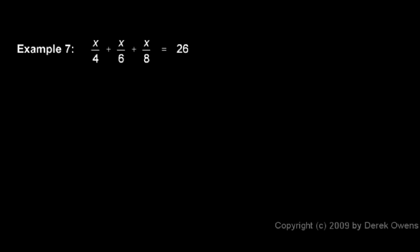x over 4 plus x over 6 plus x over 8 equals 26. I need to solve for x. Here's how I'm going to find the least common denominator.